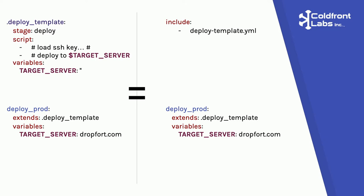As an example, these two slides are exactly the same as far as GitLab CI is concerned. Not only does the include parameter allow you to share templates across multiple projects, but it also drastically reduces the amount of code you have in your individual CI files.